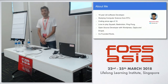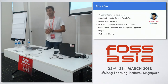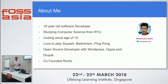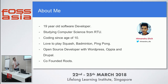A little about me: I am currently a 19-year-old student studying computer science engineering from RTU — Rajasthan Technical University in India. I've been coding since the age of 10. I love to play racket sports like squash, badminton, and ping pong. I've been involved with open source for the last five years. When I was 12, I created a plugin for WordPress as a personal project. I'm also running my own startup called Roots, which converts underutilized spaces into co-working spaces in India.